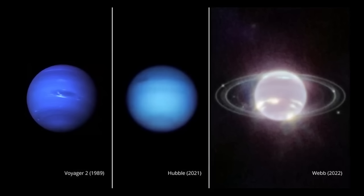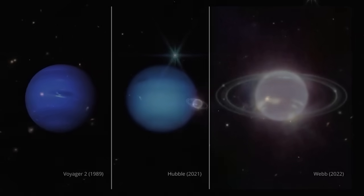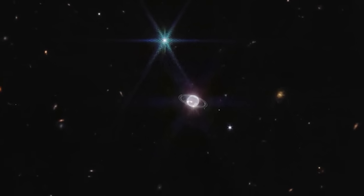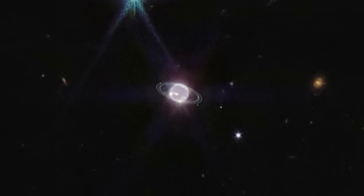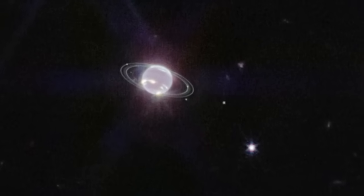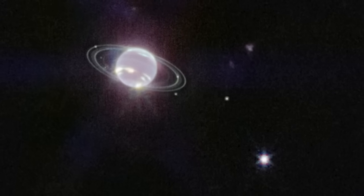On September 21st, 2022, impressive pictures of the ice giant, taken by the James Webb Telescope, were released. These pictures are landmark, because it is the first time that we can observe Neptune's rings in the infrared. There is another thing that should surprise you on these images.